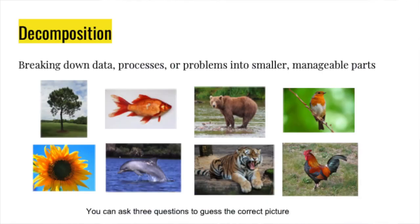Now we have a good example of this — a smaller version of what we saw with Mr. Bongo's demonstration yesterday. We're going to do decomposition with these animals. I'm going to picture one of them, and you have three questions to ask to identify the correct animal. The options are: a tree, a goldfish, a bear, a bird, a rooster, a tiger, a dolphin, or a flower. I'm thinking of one on the screen, and you can ask three questions to figure it out.